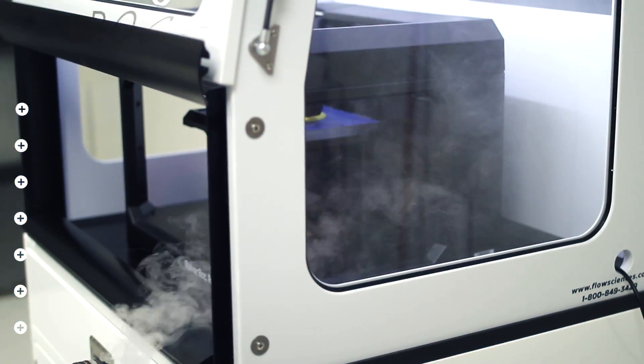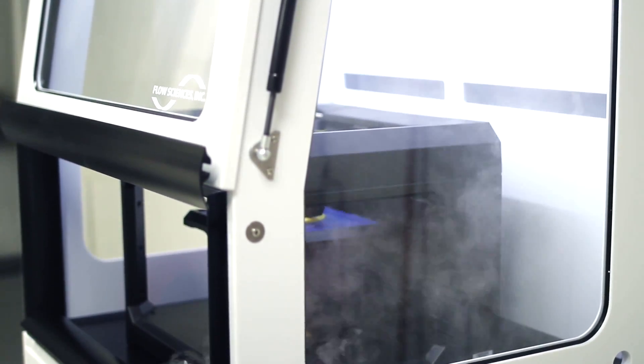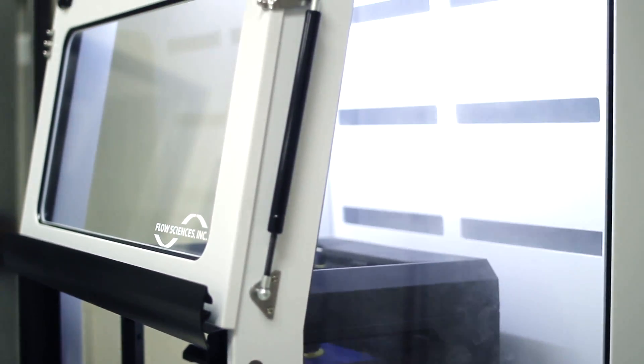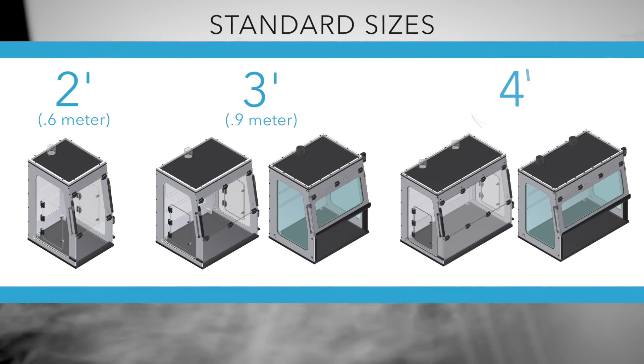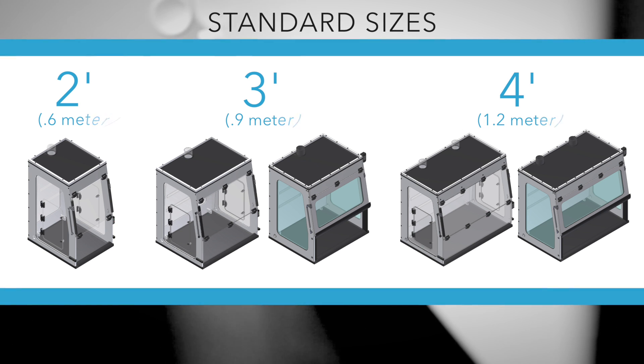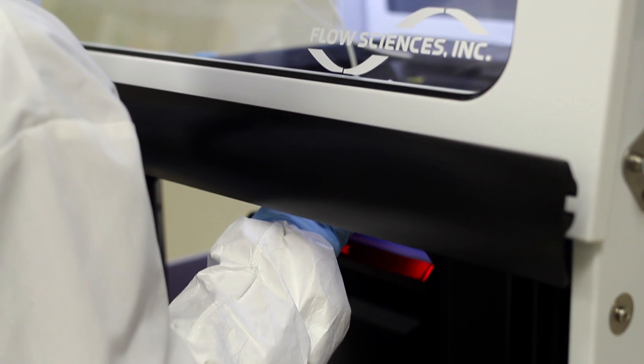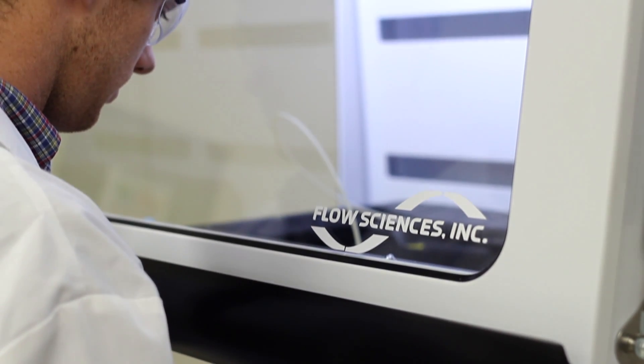Sometimes ductless fume hoods are not allowed in the lab. Space is at a premium. The LEV3 sleek design comes in standard sizes of 2, 3, or 4 foot options to best fit your lab design and application. Custom options are always available.